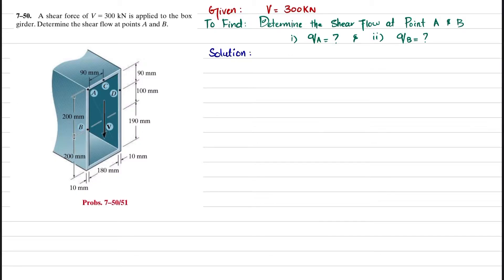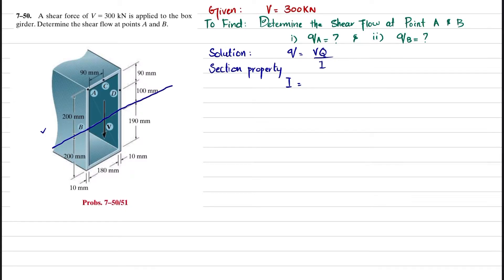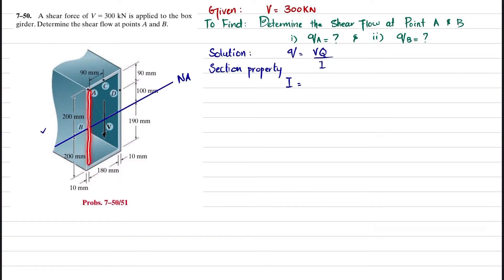Let's start with the solution. We know that shear flow q equals V times Q divided by I. We will first find I, the section property. The beam is symmetrical about the neutral axis, so we find I by taking the moment of inertia of the whole solid portion and subtracting the empty hollow portion.